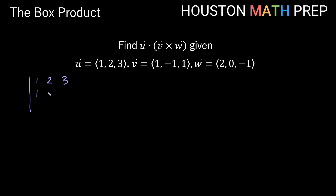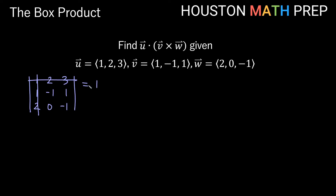Our triple scalar product is just putting all of these in the correct order into a three by three determinant: u goes in first, then v in second, and the third row is w. Instead of i-hat, j-hat, and k-hat, we have entries 1, 2, and 3. We take our first entry, which is 1, cross out its row and column, and we get these four entries left over, giving us 1 times the two by two determinant with entries -1, 1, 0, -1.